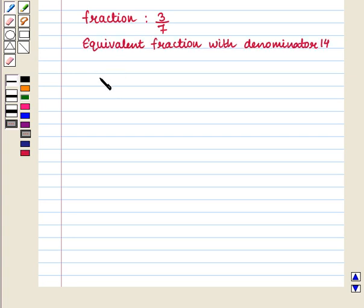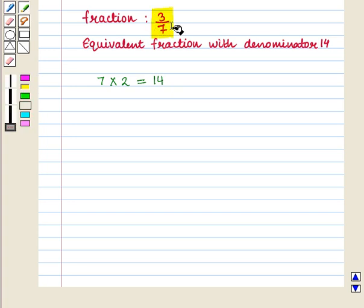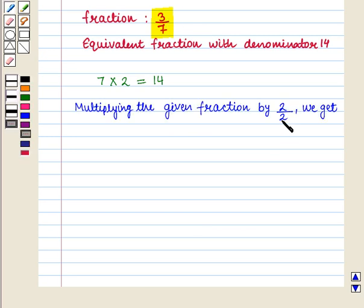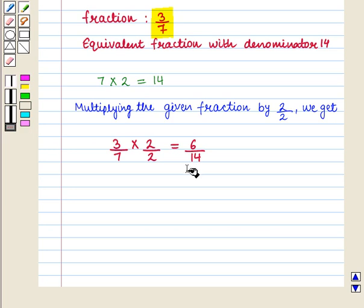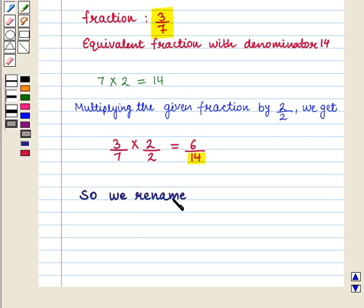We know that 7 into 2 is equal to 14. So we multiply the given fraction by 2 by 2. We get 3 by 7 into 2 by 2, which is equal to 6 by 14. So now we get an equivalent fraction with denominator 14. We rename the fraction 3 by 7 as 6 by 14.